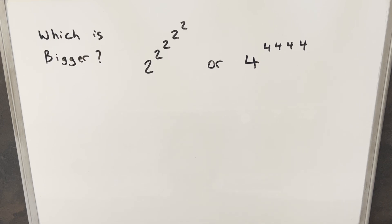Which is bigger: 2 to the 2 to the 2 to the 2 to the 2, or 4 to the 4 to the 4 to the 4? I got this problem from another YouTube channel, Learning from Christian Expo. I'll provide a link in the description if you want to check out how he did this problem.